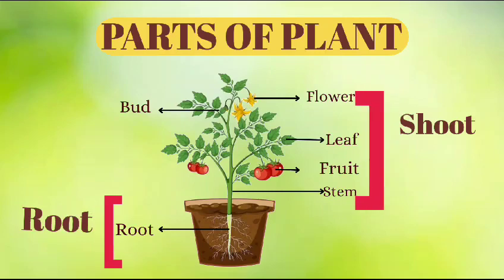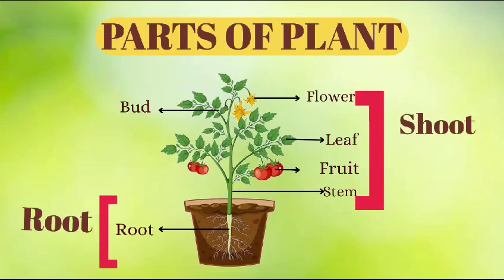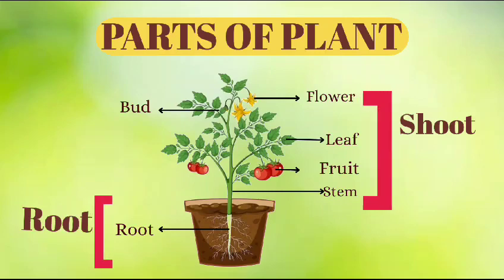The shoot consists of flower, bud, leaf, root and stem.